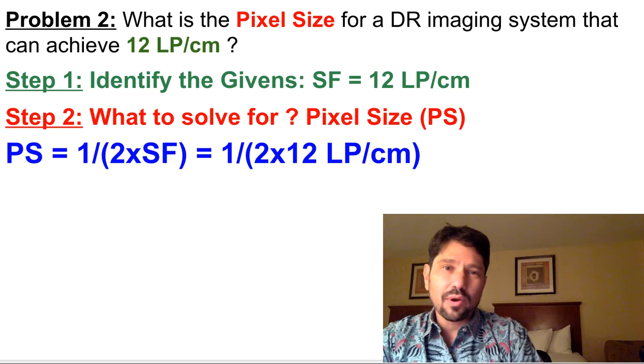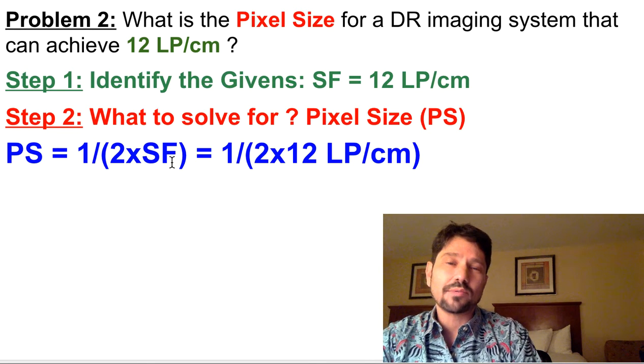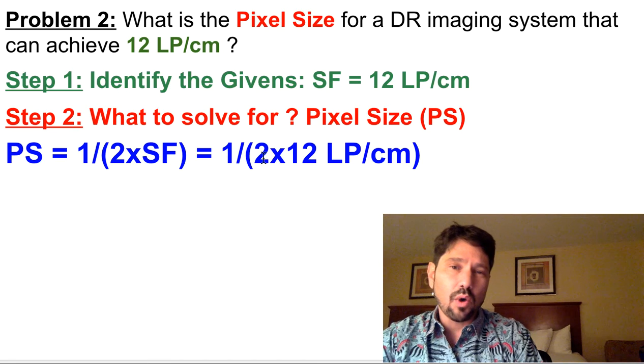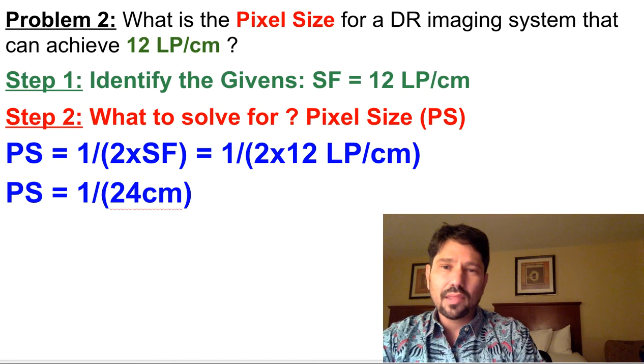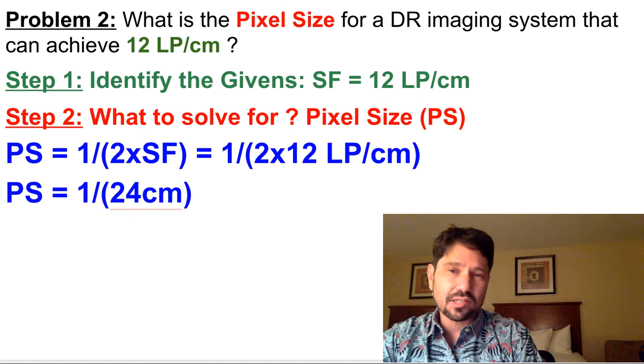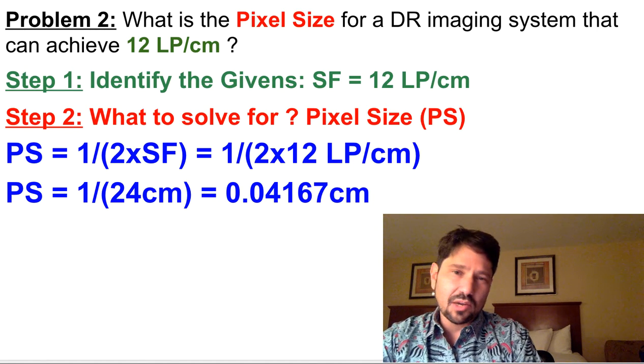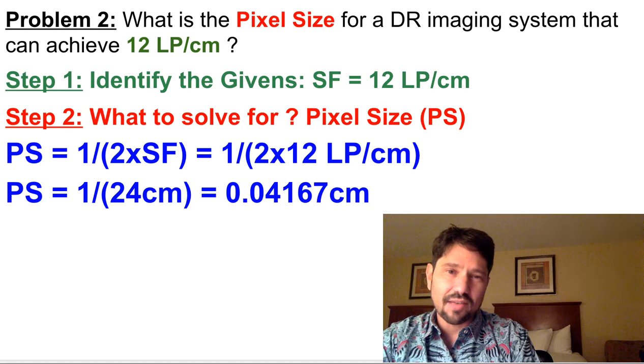All right, so back to our problem. We're going to be solving for pixel size. Pixel size equals 1 over 2 times spatial frequency, or 1 over 2 times 12 line pairs per centimeter, which equals 1 over 24 centimeters, which equals 0.04167 centimeters.